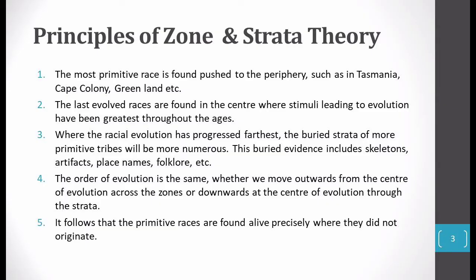When we look at the diagrammatic representation, you will see the most new races. The third principle is the process of racial evolution — this is further growing. As the races move farther away, the periphery is moving on. What is the buried strata? The strata means evidence — like skeletons, artifacts, or place names, folklore. All the strata, meaning where people live, can be buried evidence. Those people who used them can be traced through place names, cultural elements, civilization elements. As race evolution progresses further, the buried strata will increase.